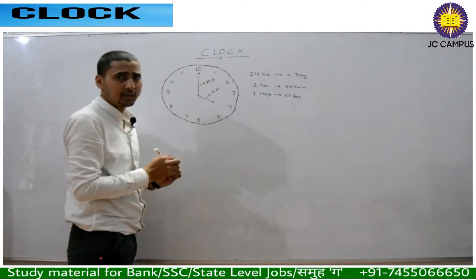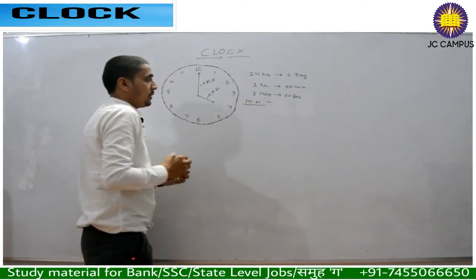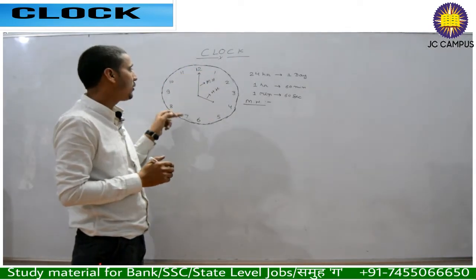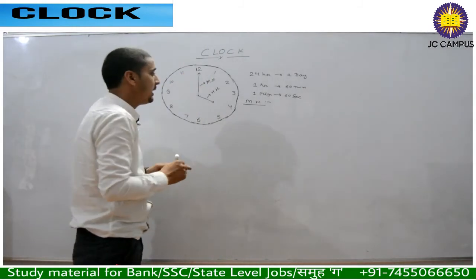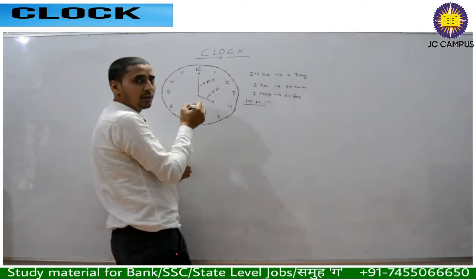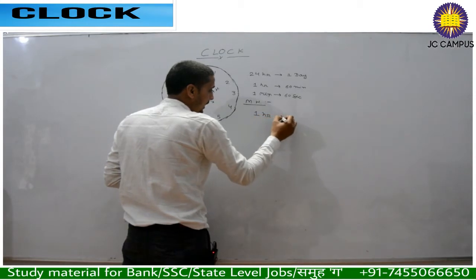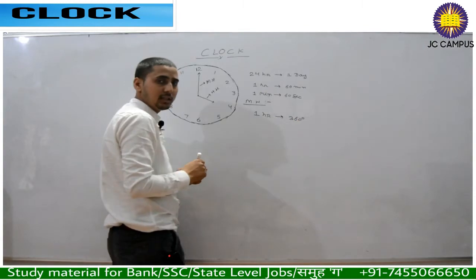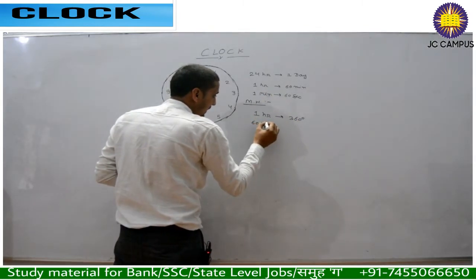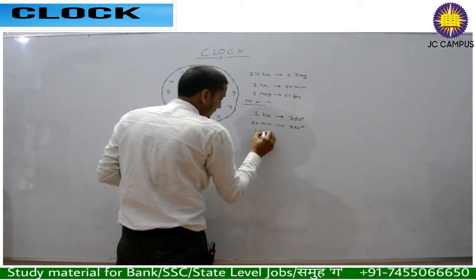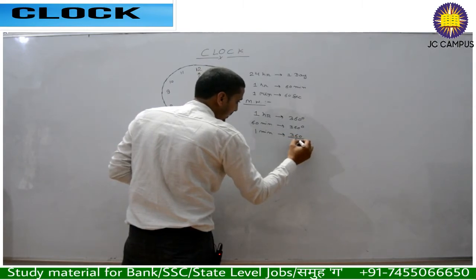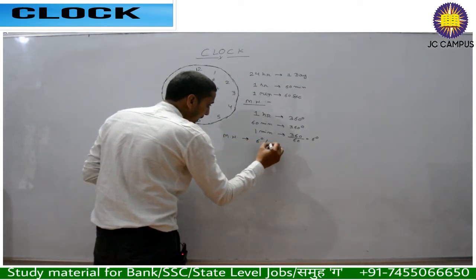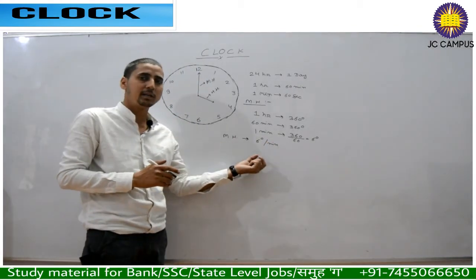First let's talk about the minute hand. The minute hand completes one full round in how much time? If it is at 12 now, when will it come back to 12? That means the minute hand completes one full round in 1 hour, i.e., 360 degrees in 60 minutes. So in one minute it moves 360/60 = 6 degrees. The speed of the minute hand is 6 degrees per minute.